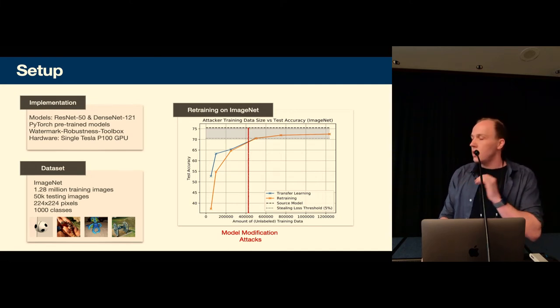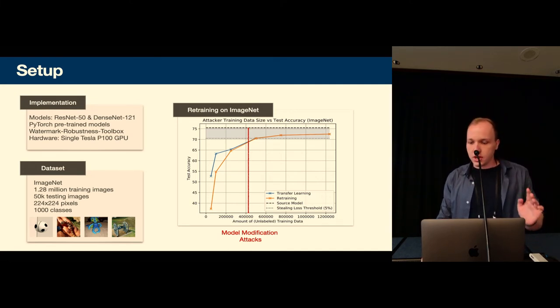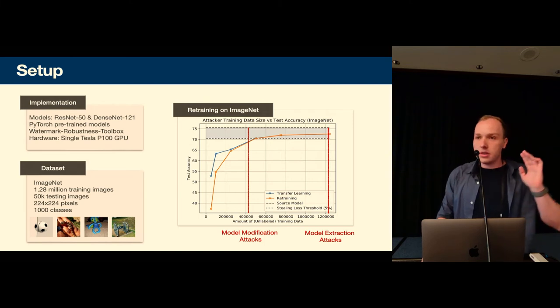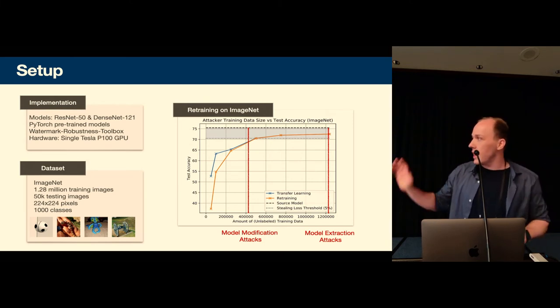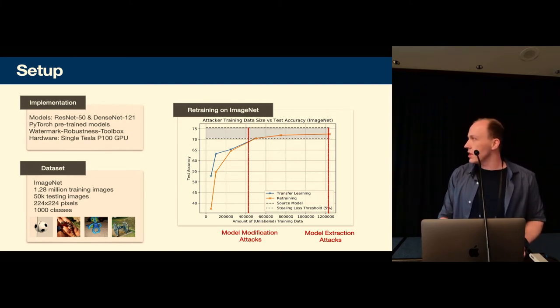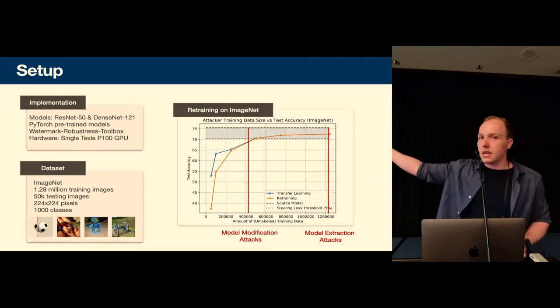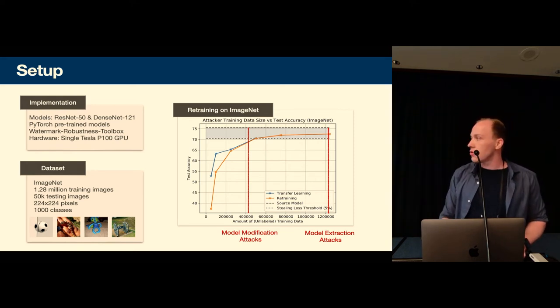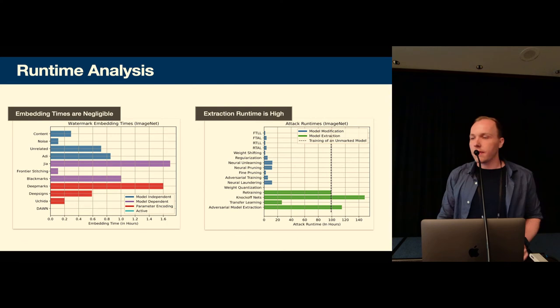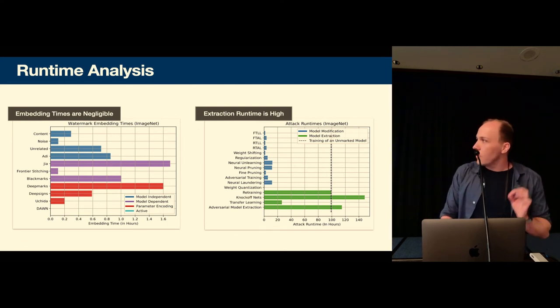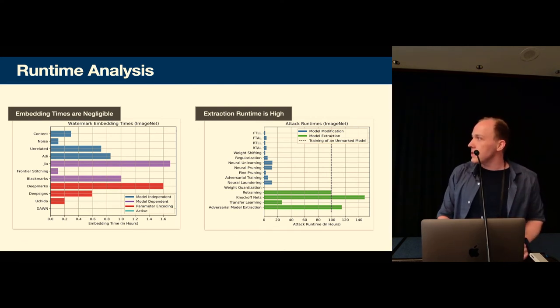So we see that for model modification attacks we limit the attacker to about a third of the unlabeled training data whereas the model extraction attacker has access to all of the unlabeled training data because if they had less they couldn't train a model, they couldn't extract it with high enough accuracy.